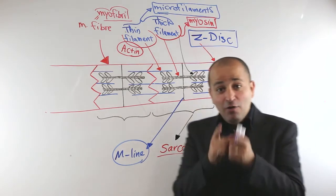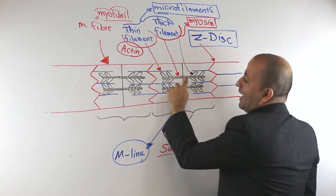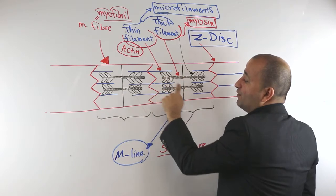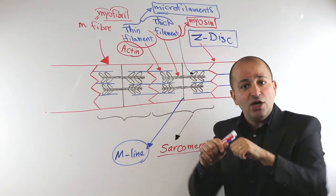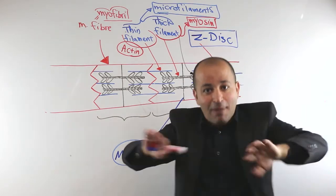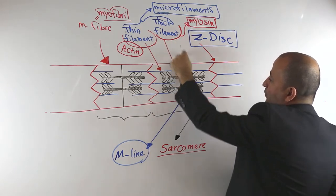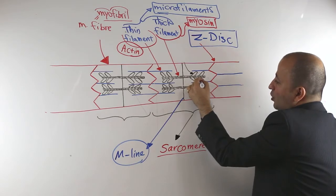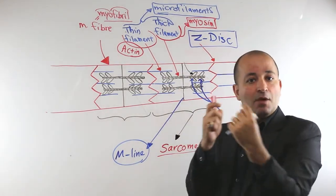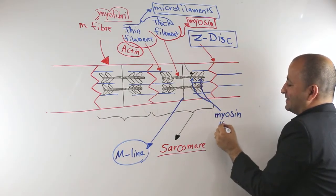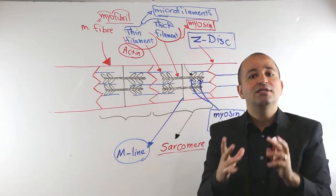Now let's see how the thin and thick filaments work together to do contraction and shortening of the muscle. When you look at the end of each myosin, or thick filament, you see little structures connecting to them — like little paddles, like the paddle you use in a boat. Each of these little structures is called a myosin head. The function of myosin heads is key to contraction.